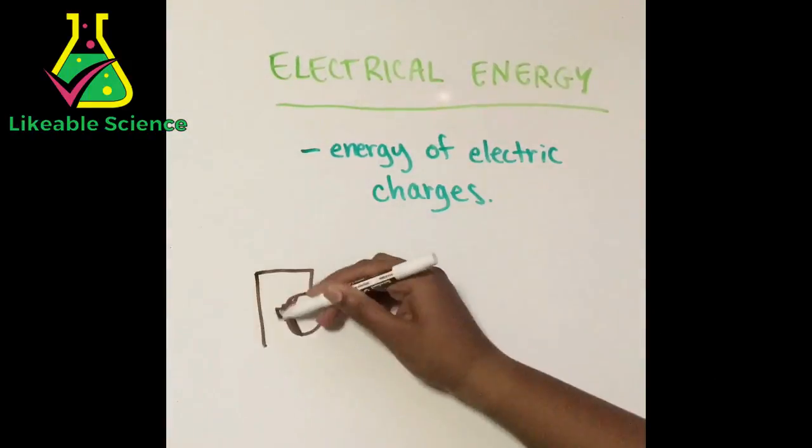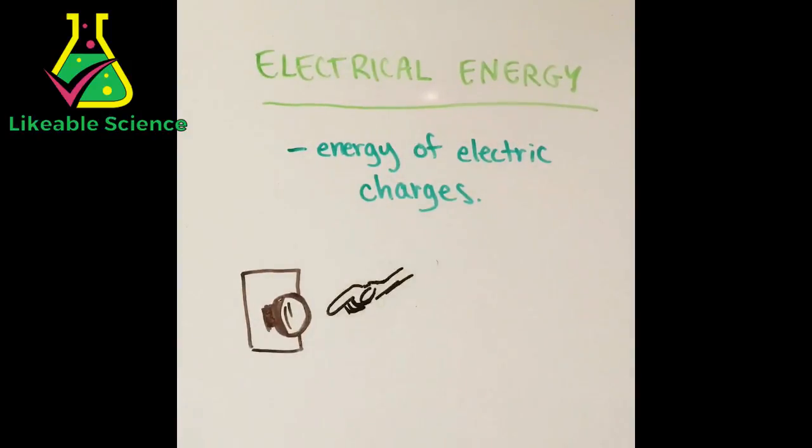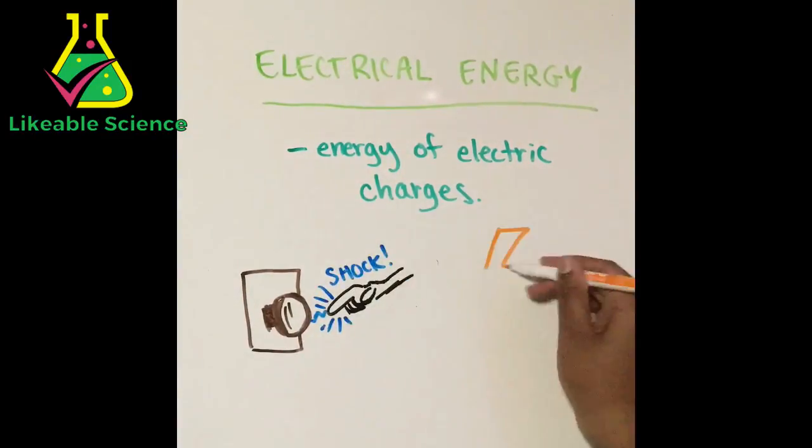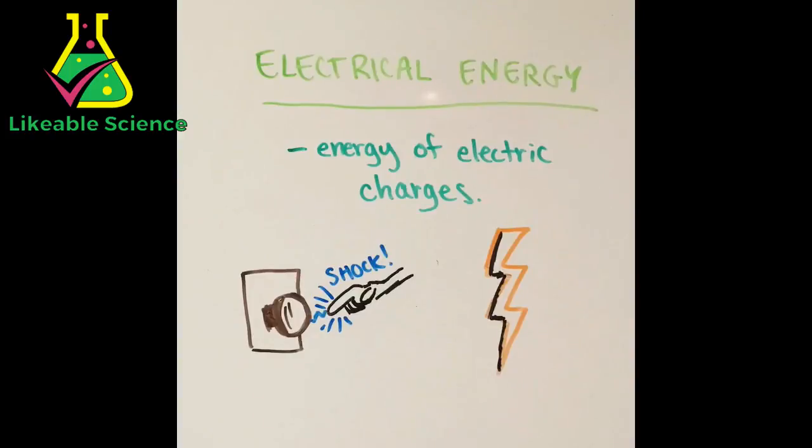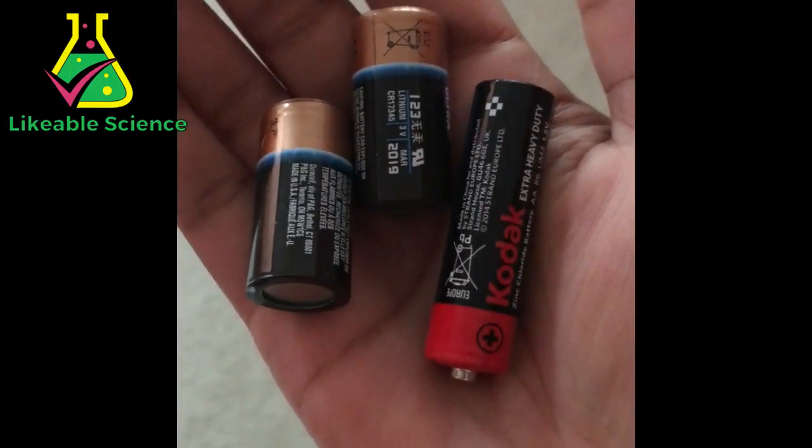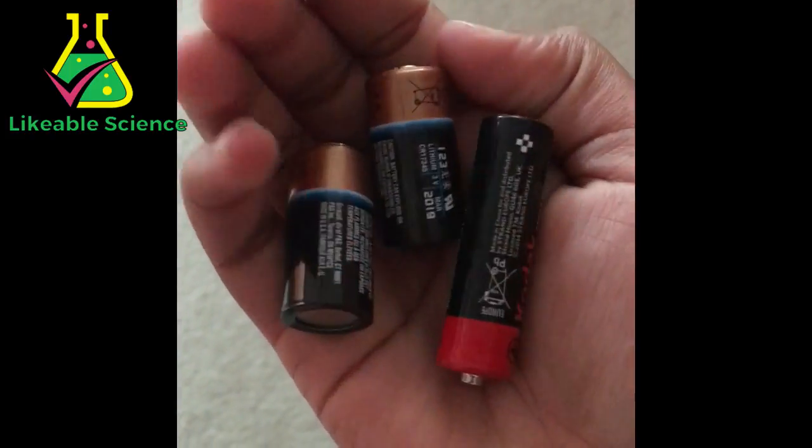Electrical energy is the energy of electric charges. Electricity travels from one object to another like when you get a shock from a doorknob or when lightning strikes. Even when you use a battery to complete a circuit, electrical energy is being used.